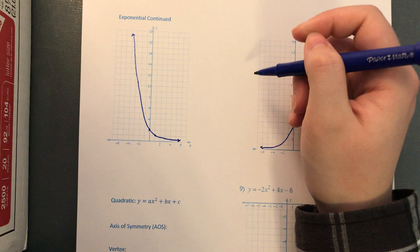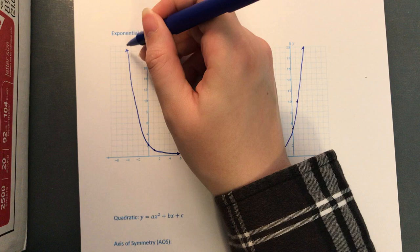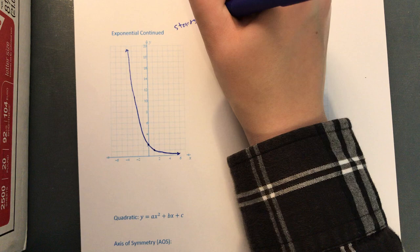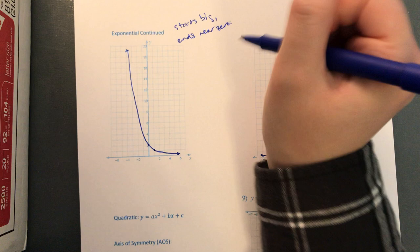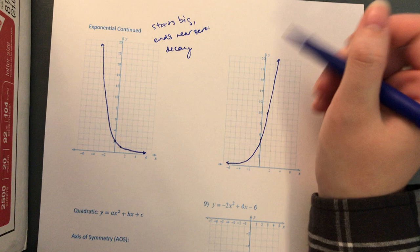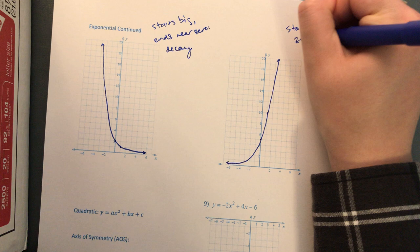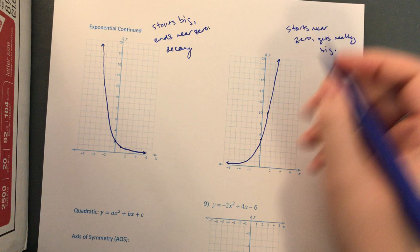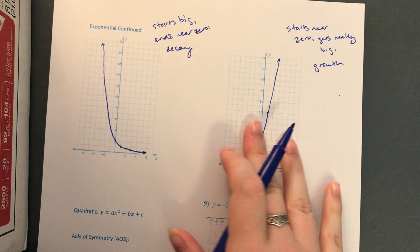Similarly to linear equations, we've also worked backwards and written equations based on exponential graphs. The first thing to identify is: is it growth or decay? For this one, we're starting high and getting near zero — so it starts big and ends near zero, meaning the population is getting smaller and smaller. This is decay. Versus the other one, we start near zero and it gets really big — that's growth, it's growing as time goes on.